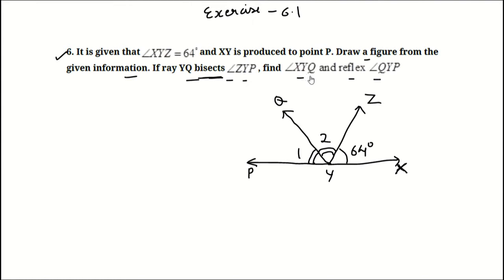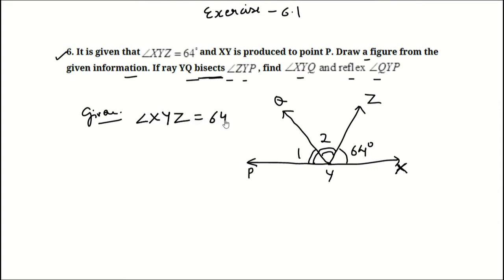We have to find angle XYQ and reflex angle QYP. We are given angle XYZ is equal to 64 degrees, and angle 1 is equal to angle 2 because YQ is bisecting angle ZYP. Angle 1 is equal to angle 2.